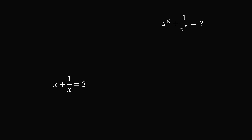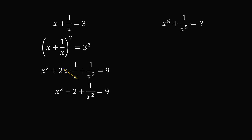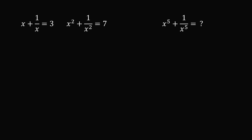So let's focus on this equation. We know the value of x plus 1 over x is equal to 3, but how do we get the value of x to the power of 5 plus 1 over x to the power of 5? Let's start by squaring both sides. The square of x plus 1 over x equals 3 squared, which is 9. Squaring the left-hand side gives x squared plus 2x times 1 over x plus 1 over x squared. Since x times 1 over x equals 1, we have x squared plus 2 plus 1 over x squared equals 9. Subtracting 2 from both sides gives x squared plus 1 over x squared equals 7.